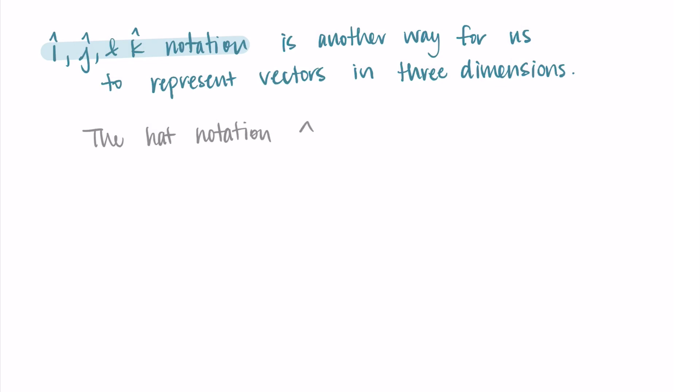Here you're noticing that I have this hat notation on the i, j, and k. So we actually have i hat, j hat, and k hat. This caret or the hat symbol that is above the letter is just another notation to represent a vector. So this is like an i vector, a j vector, and a k vector.